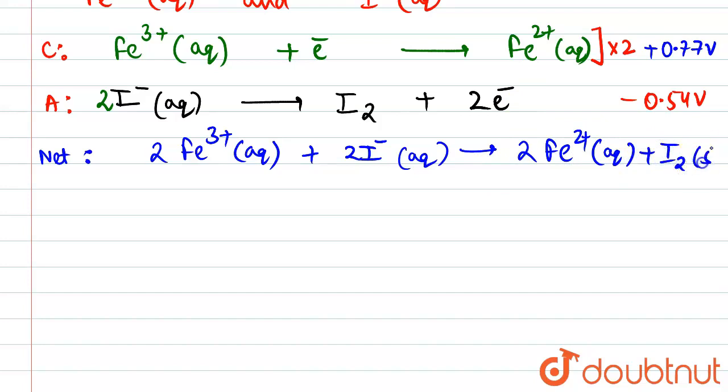If we find the net E naught of the cell, that would be simply equal to that of the cathode, 0.77, minus E naught of the anode. Basically, we would be having E naught that is minus 0.54. From here, the value of E naught of the cell comes out to be equal to plus 0.23 volts.